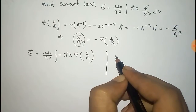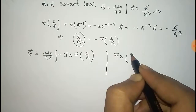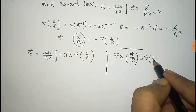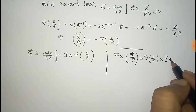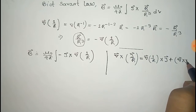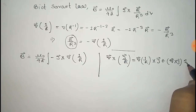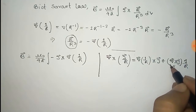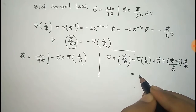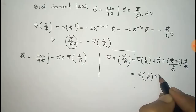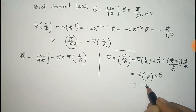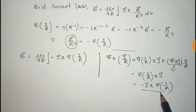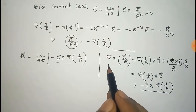We can see that the curl of J/r can be written as the gradient of 1/r cross J, plus the curl of J times 1/r. For steady current, J is a constant vector so curl of J is zero. So it becomes gradient of 1/r plus J, which can be written as minus of J cross gradient of 1/r. Now we can replace this term with this.